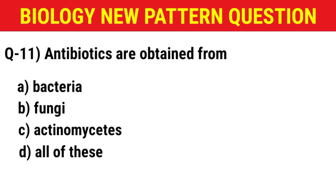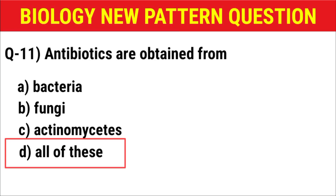Next question: Antibiotics are obtained from — (A) bacteria, (B) fungi, (C) actinomycetes, (D) all of these. The correct answer is option D: all of these.